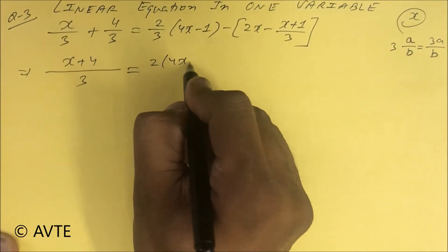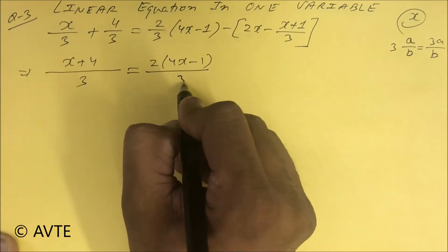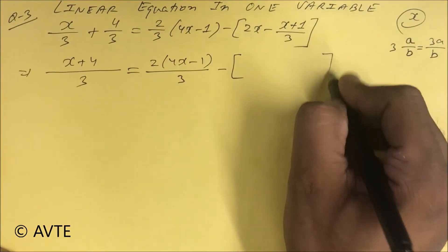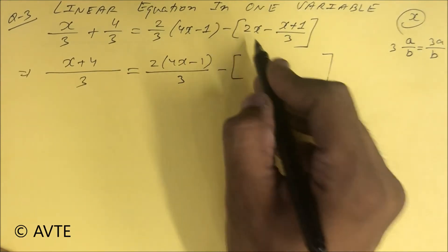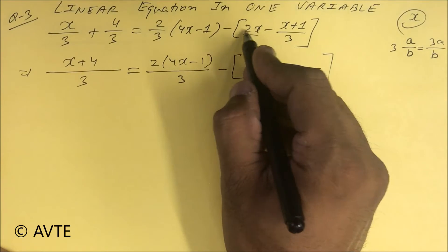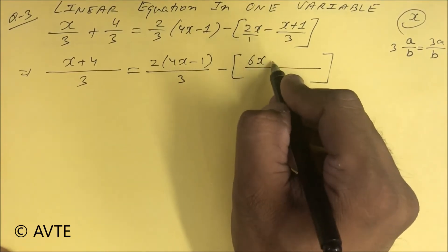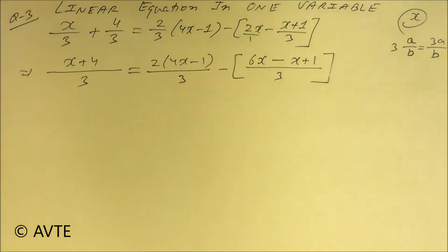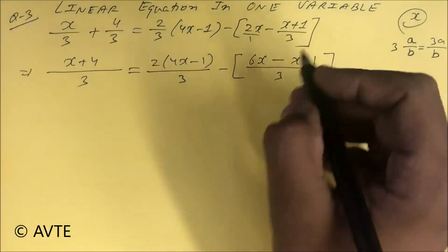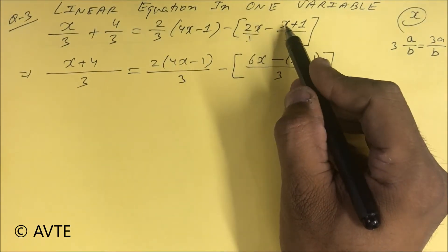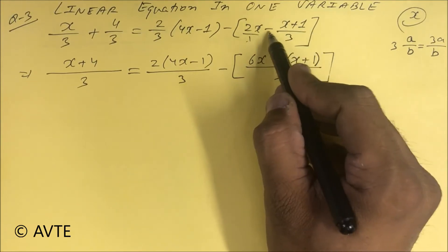There is two in bracket: four x minus one upon three. Now in this bracket we have to see this — it is 2x upon one, so LCM is three. Three into 2x is 6x. Then minus x plus one — but this is a mistake, it should be in bracket. One goes here, so this is x plus one with a minus sign.